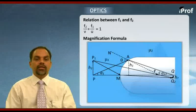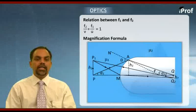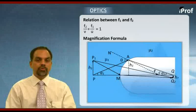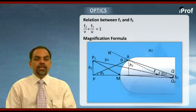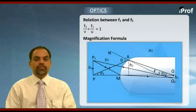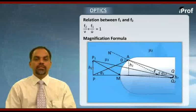We consider a ray from p going along principle axis. This ray will go undeviated. Let us take another ray from bottom of the object and it hits refracting surface at point a and after refraction, it goes into denser medium and meets the principal axis at point q.